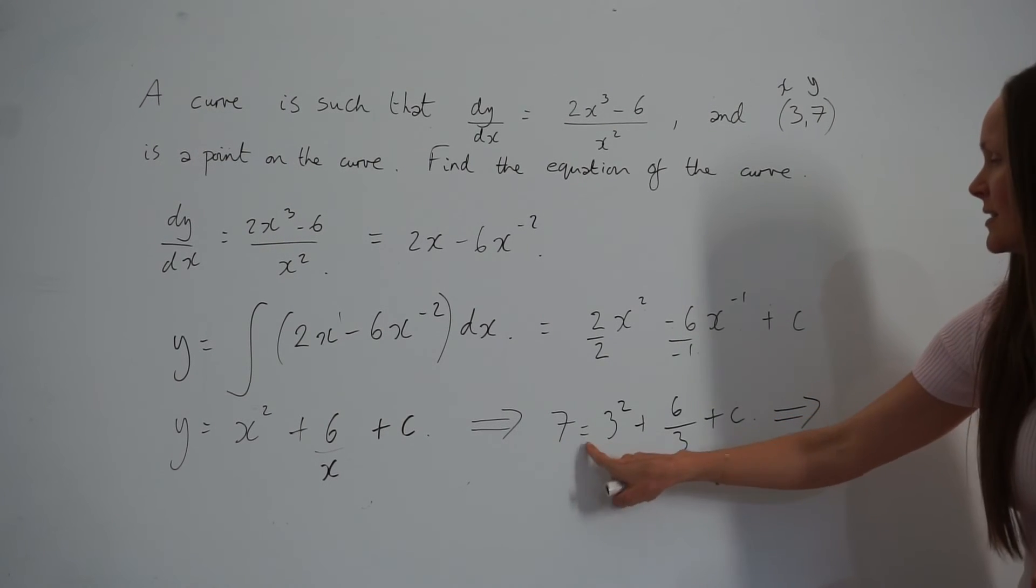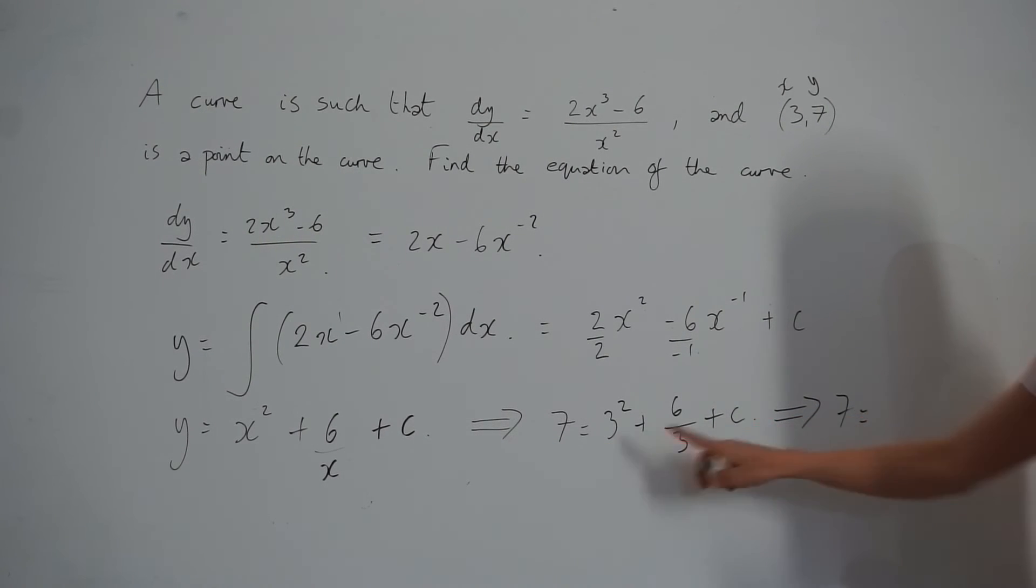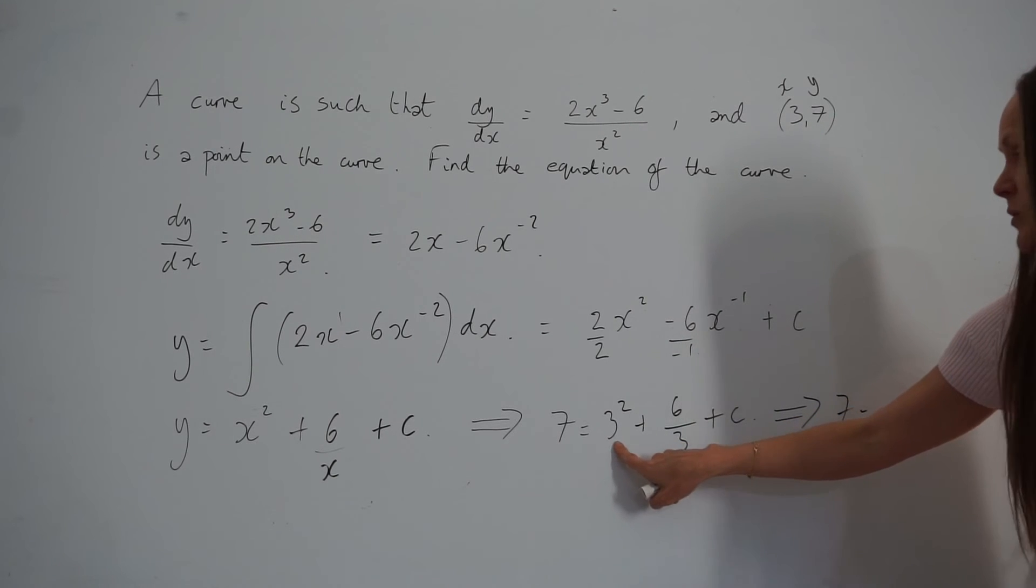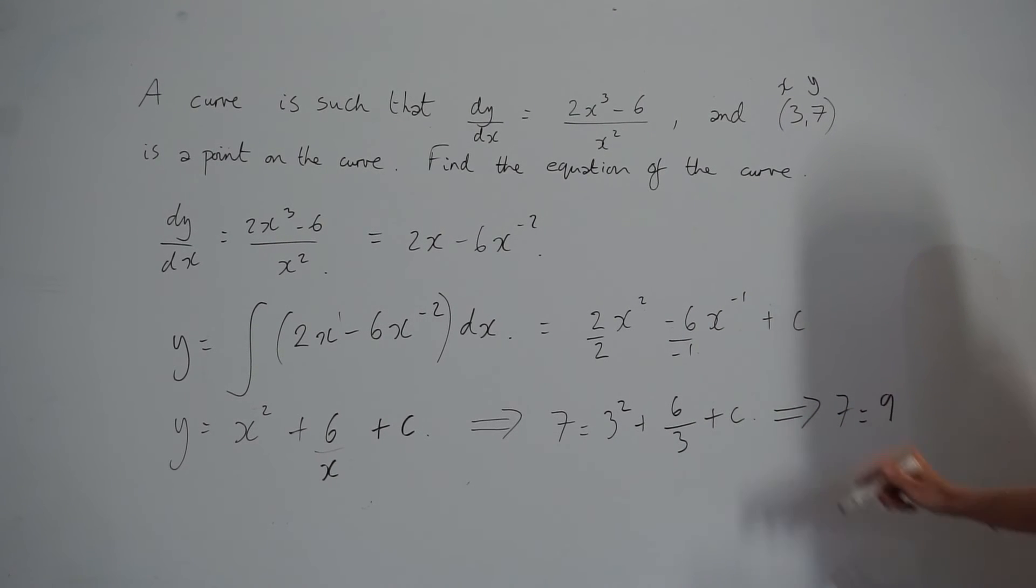7 equals 3², which is 3 times 3, which is 9, plus 6 divided by 3, which is 2, plus c. So 9 plus 2 is 11. If I subtract 11 from both sides, I find that c equals -4.